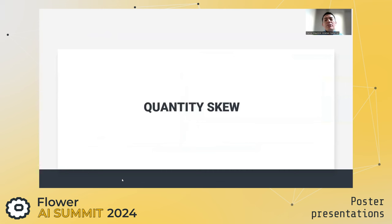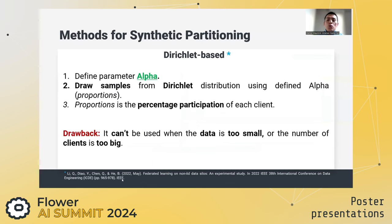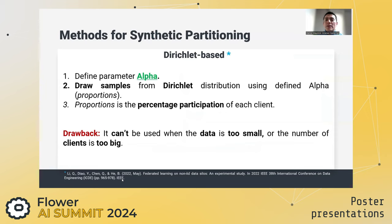Now regarding quantity skew, in our library we implemented the state-of-the-art method based on the Dirichlet distribution using the desired alpha. However, this method cannot be used when the data is too small or the number of clients is too large.